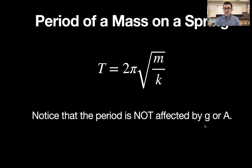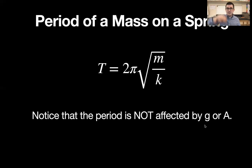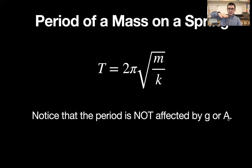Notice there's no acceleration due to gravity in the equation, which means it also applies to a spring oscillating vertically. You can take the same spring-mass system to the moon and it will have the same period — I just think that's really interesting. Also, the amplitude doesn't matter: whether you stretch it a little or a lot, it's going to have the same period. Those are two important things to know about the period of a mass-spring system.